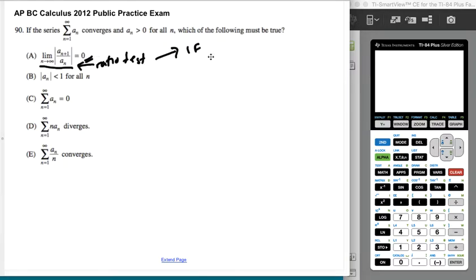So if this converges, the ratio test tells us that this limit is less than one, doesn't tell us that it's necessarily zero. So that's definitely not a must-be-true situation. Because that's not what we know.